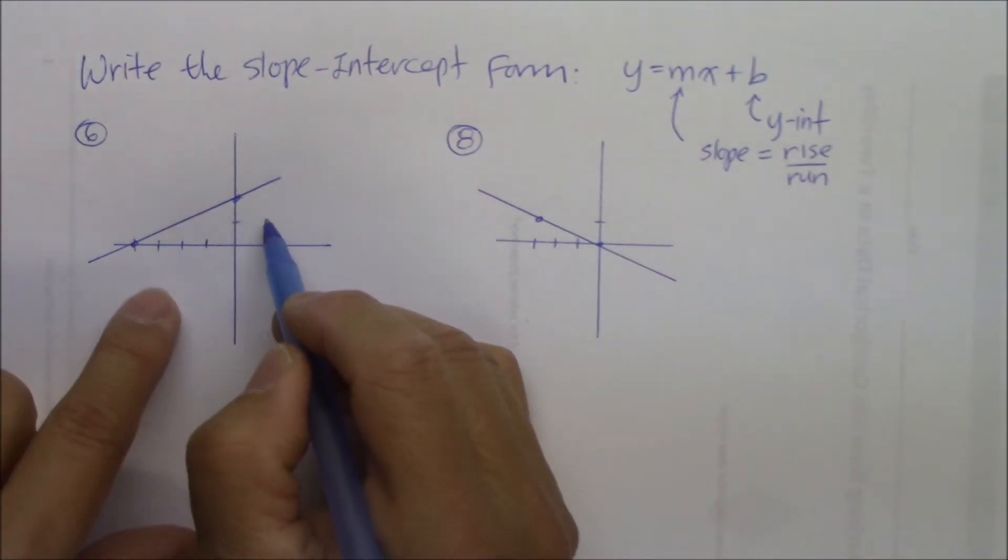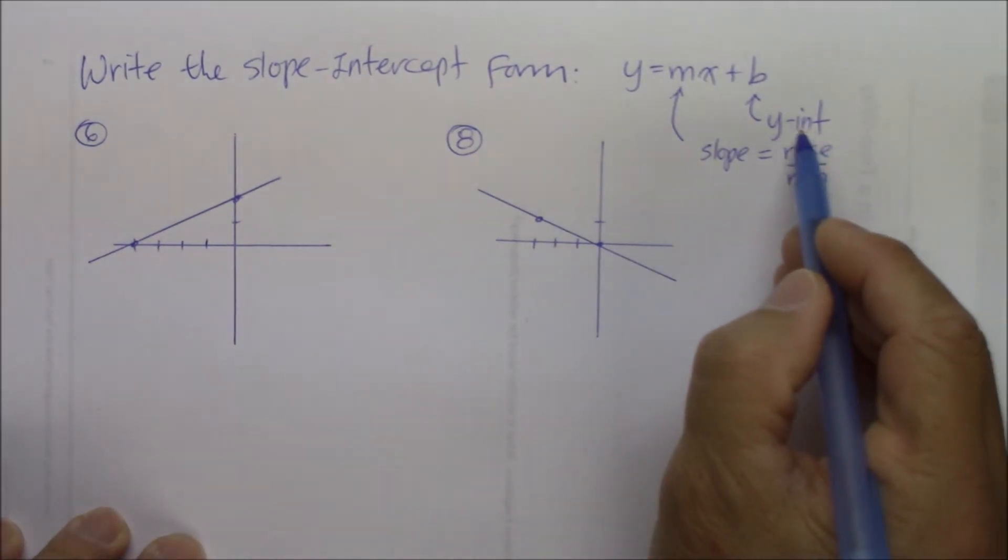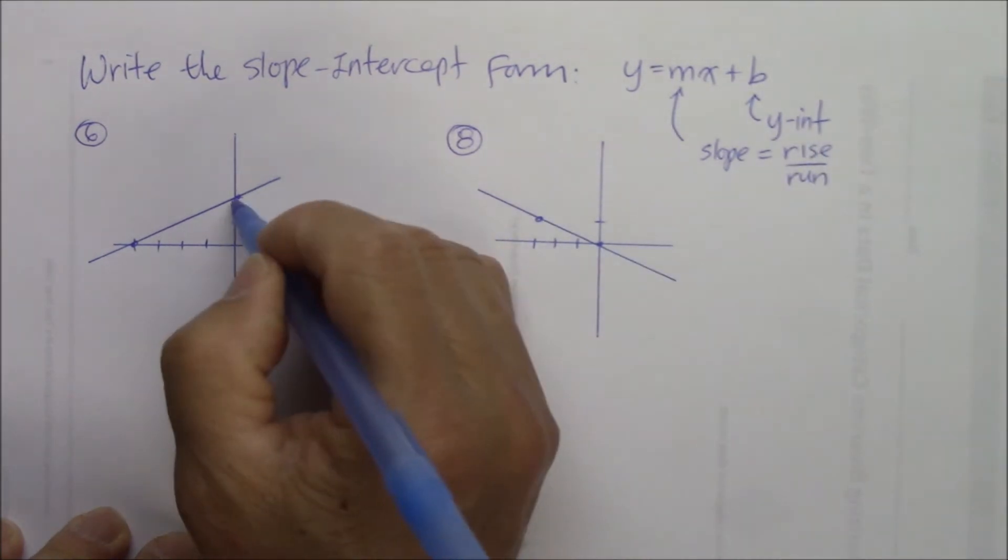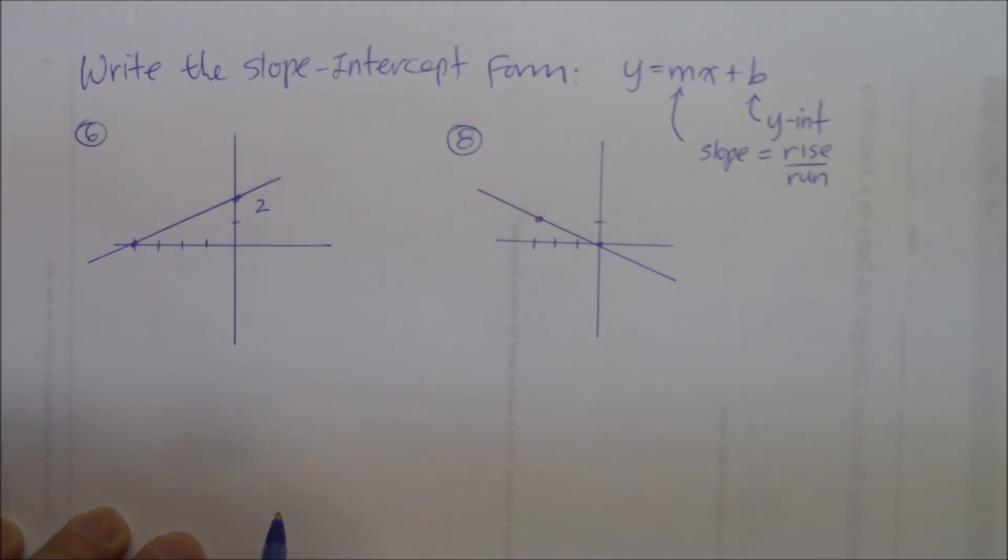So in this case, we can write this graph into a slope-intercept form by first identifying the y-intercept. The y-intercept is one, two. Right there. That's the b.